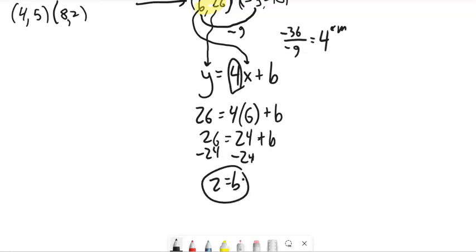So I know m is 4. I know b is 2. So I can write my equation for it now. y equals 4x plus 2. There's my equation.